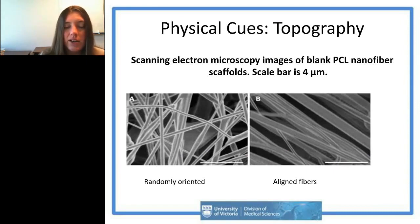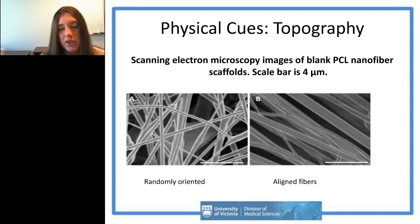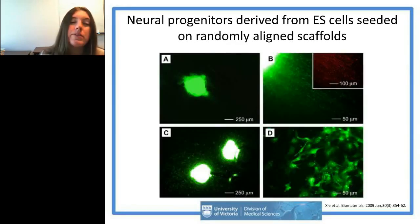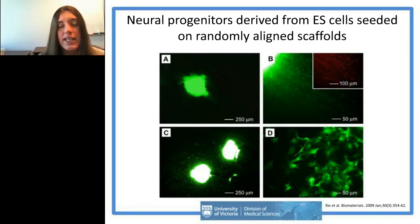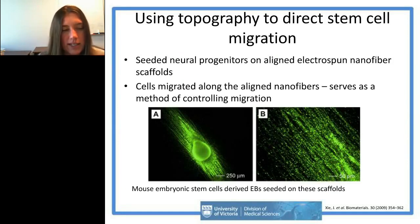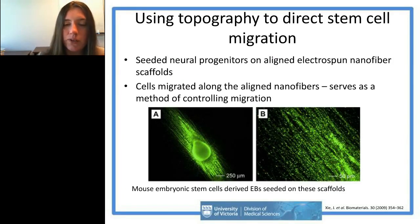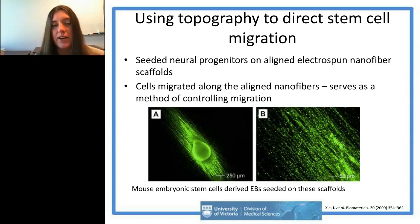We've spun both randomly oriented and aligned nanofibers as pure PCL blank scaffolds to demonstrate nice topography. Previous work I did at Washington University showed that neural progenitors from mouse ESCs seeded on randomly aligned scaffolds migrated out in all directions, while aligned scaffolds produced really nice neurite extension along the nanofibers. For spinal cord injury, this could potentially orient neurons to migrate directionally down nanofibers rather than forming a mesh over the injury site — one way to add higher order structure to engineered tissues.